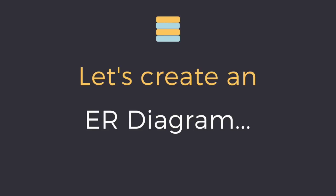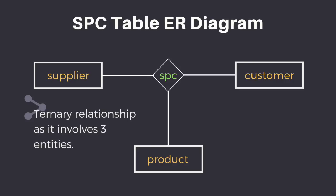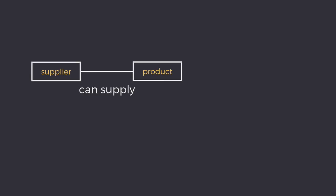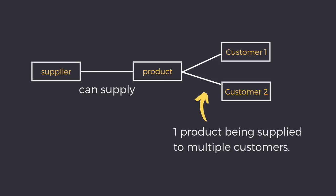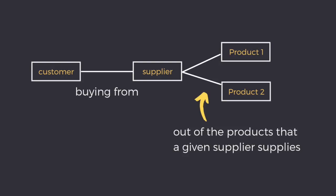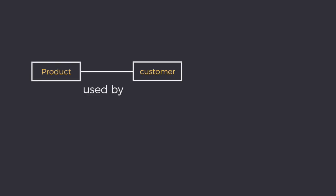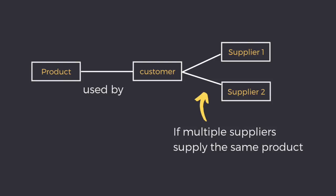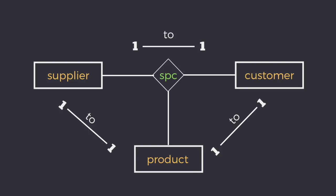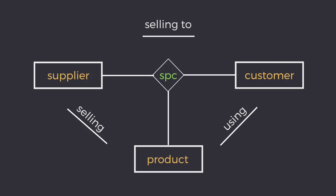Let's create an ER diagram for this relationship. It is clearly a ternary relationship as it involves more than two entities. SPC here represents the relationship. As per the ER diagram, a given supplier can supply a given part to either one or more customers. Similarly, a given customer getting supplied by a supplier can have one or more products. A given product used by a customer can be supplied by multiple suppliers. The possible relations are: supplier selling products, customer using products, and supplier selling to customer.